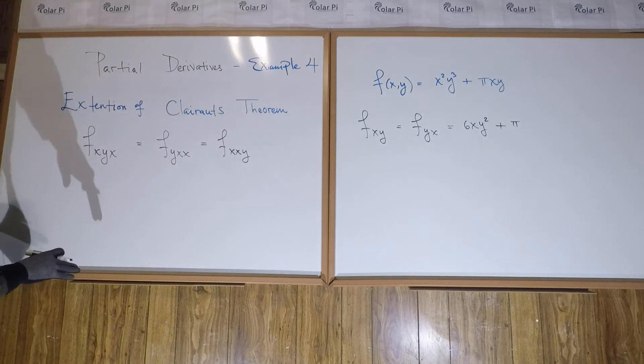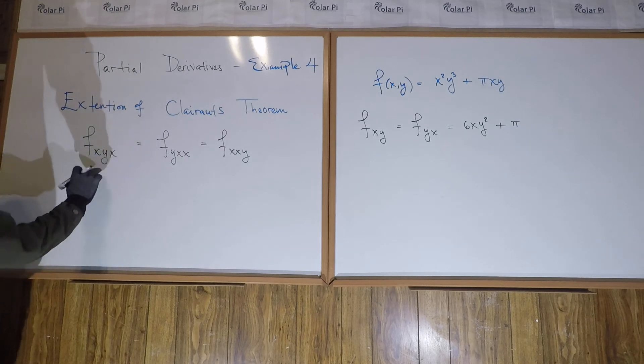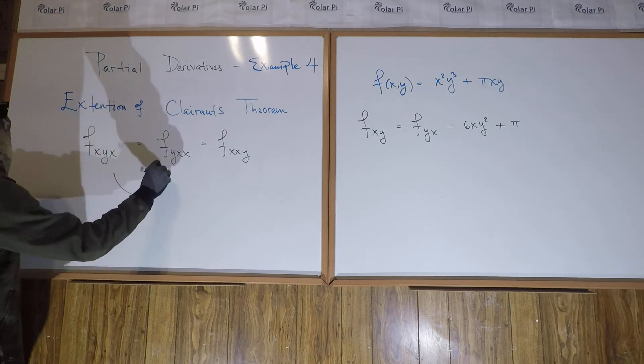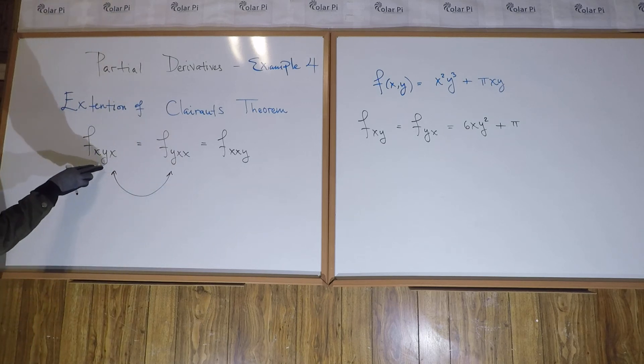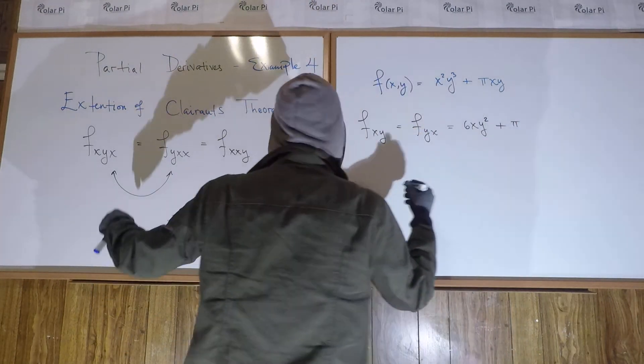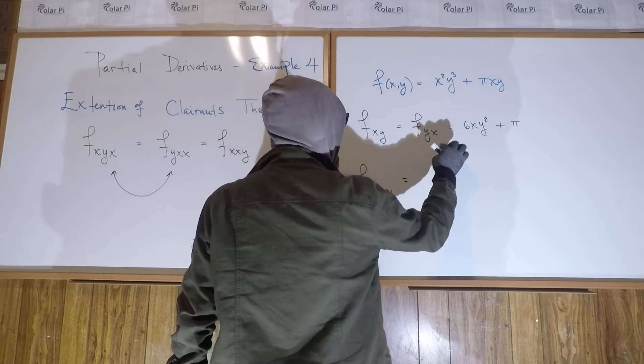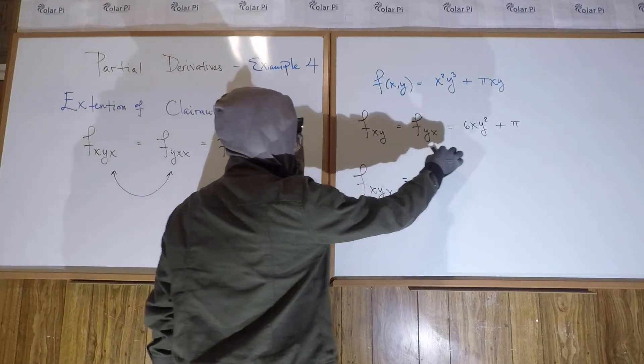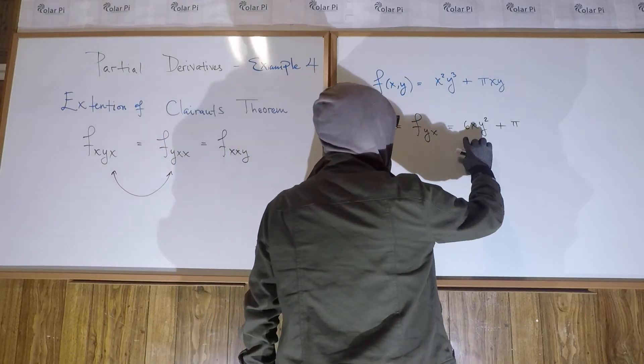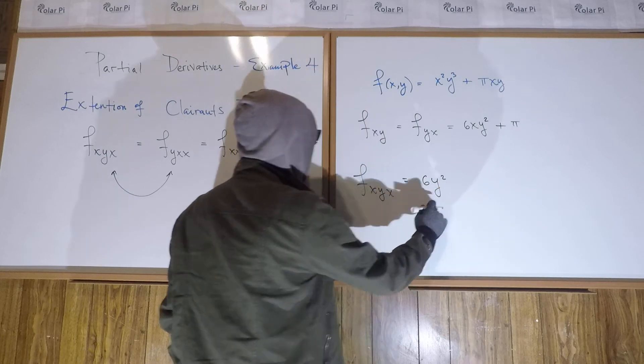So, I did all that to do this, which is to check that any one of, any two of these guys are equal, right? So, why don't we check these two since we already have a head start about Fxy and Fyx, both being this. So, when we do Fxyx, we start with Fxy, which is this, and take the partial with respect to x, right? The partial with respect to x of this is going to be 6y squared, and that's that, right?